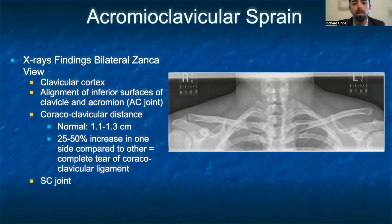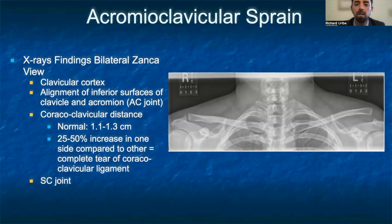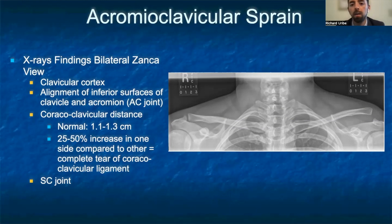The best x-ray view to examine AC joint injuries is the bilateral Zanca view. On the x-ray to the right, you can see an intact clavicular cortex. The coracoclavicular distance on the left is increased, and given that the increase is more than 25 to 50% compared to the right, there is strong evidence of a complete tear of the coracoclavicular ligament.